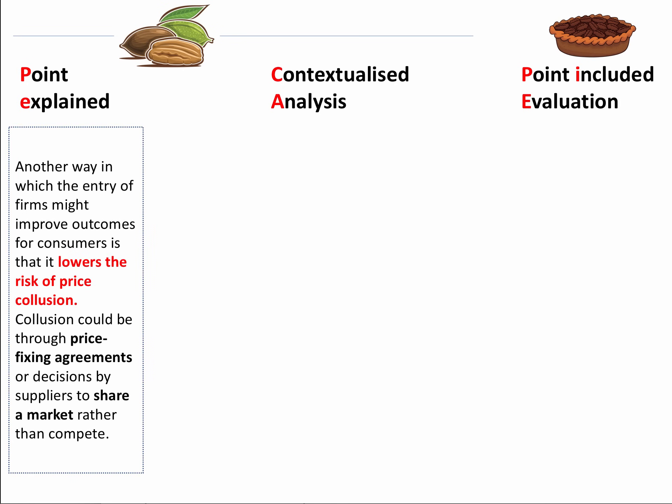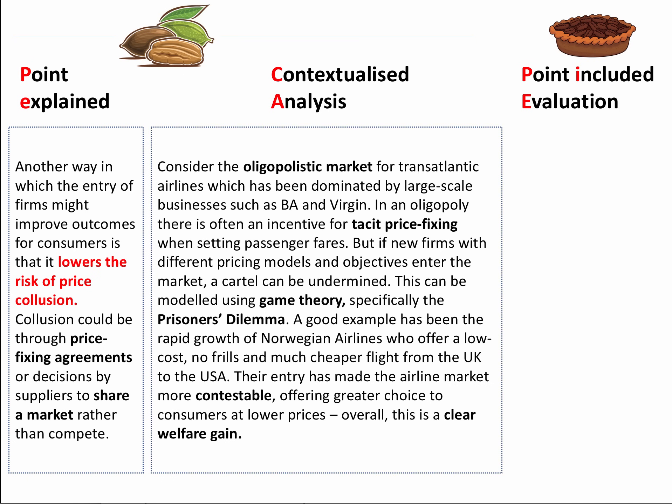A second point: another way in which the entry of new firms might improve outcomes for consumers is that it reduces the risk of price collusion. Collusion could be through price-fixing agreements or decisions by suppliers to share the market rather than compete. I've made my point and briefly explained it. Now build contextualised analysis: consider the oligopolistic market for transatlantic airlines, which has been dominated by large-scale businesses including BA and Virgin. In an oligopoly, there's often an incentive for tacit price-fixing when selling fares. But if new firms with different pricing models and objectives enter the market, a cartel can be undermined.